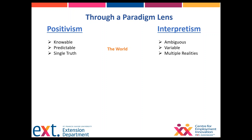Interpretivists say that research is very much context-derived, and to claim there is only one single truth is foolishness — because culture, religion, and personal experience all have an effect. As many human beings as there are on the planet, there are that many ways of knowing. Positivists counter: the world is observable, knowable, and there is only one truth.